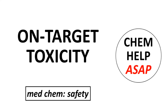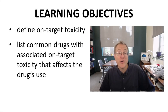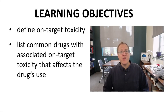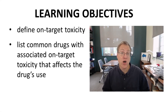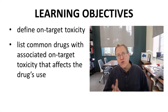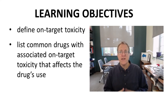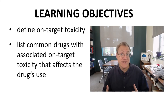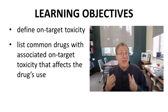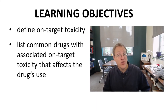Hello to you from Chem Help ASAP. Let's go into more detail on different origins of toxicity, specifically toxicity that arises from binding to the intended target. Upon completion of this video, students will be able to define the concept of on-target toxicity and list two common examples of drugs that show on-target toxicity to the extent that it affects the use of the drug.